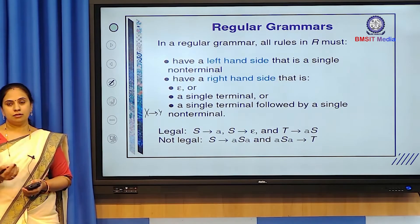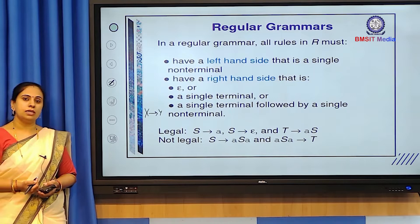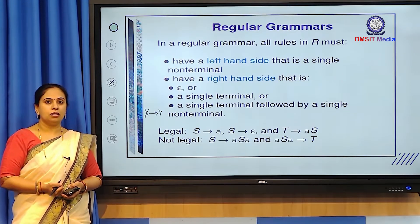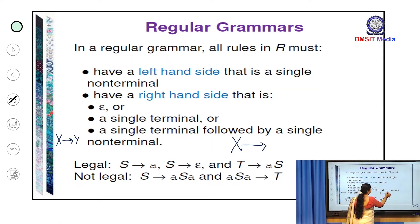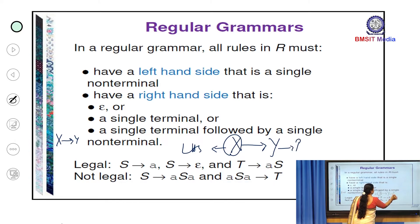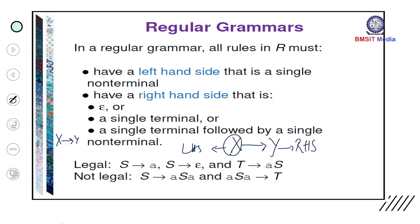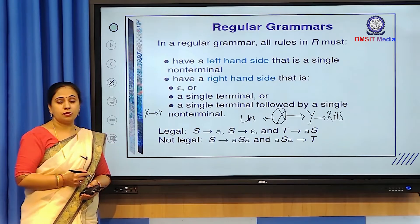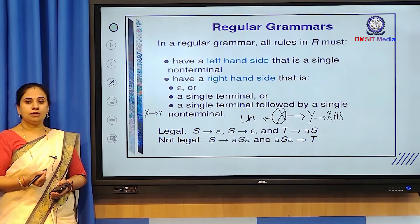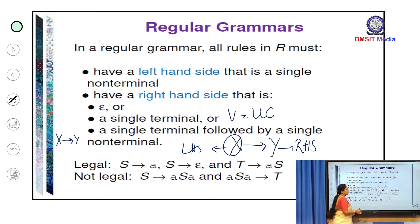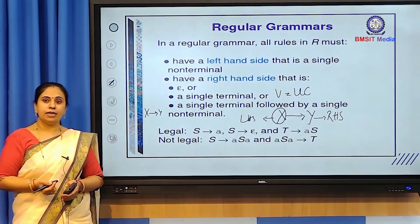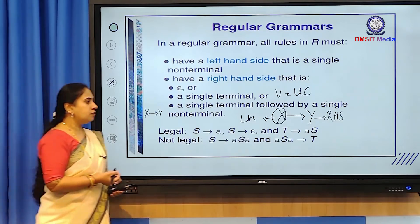In regular grammar, all rules in R must have a left-hand side that is a single non-terminal. Since productions are of the form x → y, x is the LHS and y is the RHS. A single non-terminal must be present on the left-hand side. Any symbol written in uppercase in V is termed a non-terminal.